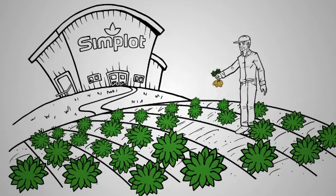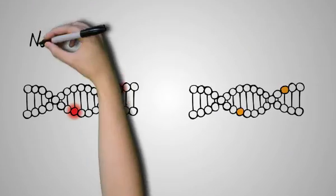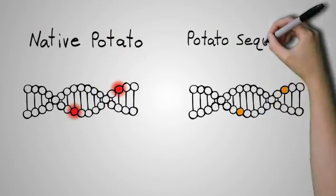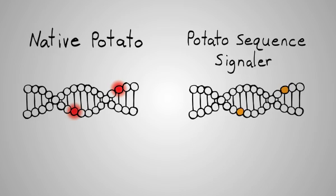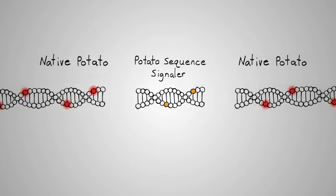Simplot's innate technology takes useful genes from wild and cultivated potatoes to create a gene sequence that is inserted into the potato plantlets using biotechnology. And because the plant's genome recognizes that sequence, it triggers a signal to suppress naturally occurring enzymes in a process called RNA interference. This way, no foreign genes are added. Only two traits are suppressed. Essentially, the volume on these traits is turned down.